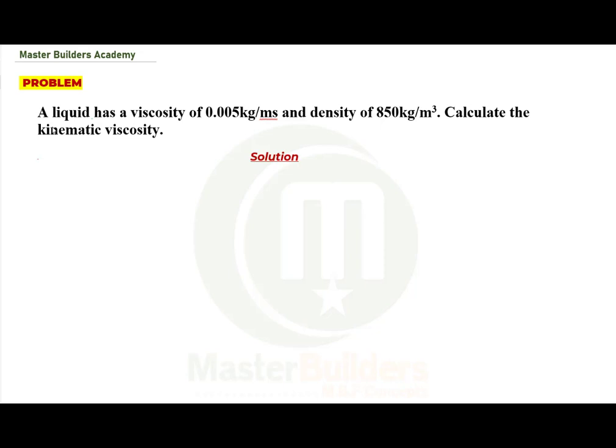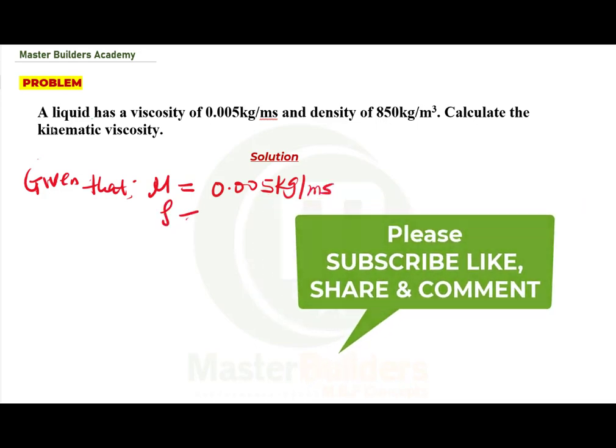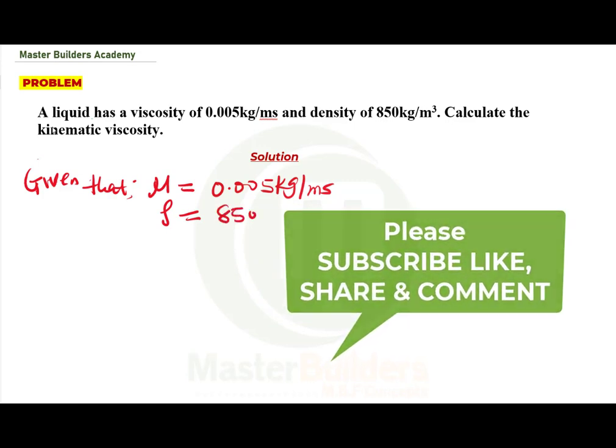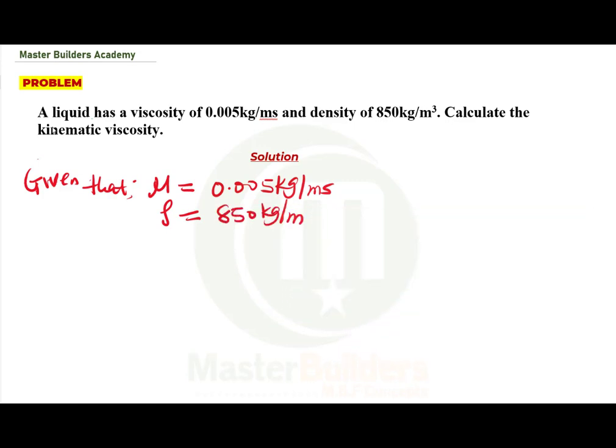This is a world problem, guys. It's very simple. As usual, we start solving this problem by saying given that, using their symbols: viscosity is equal to 0.005 kilogram per meter per second, and density is given to be 850 kilogram per meter cube. Kinematic viscosity is unknown.